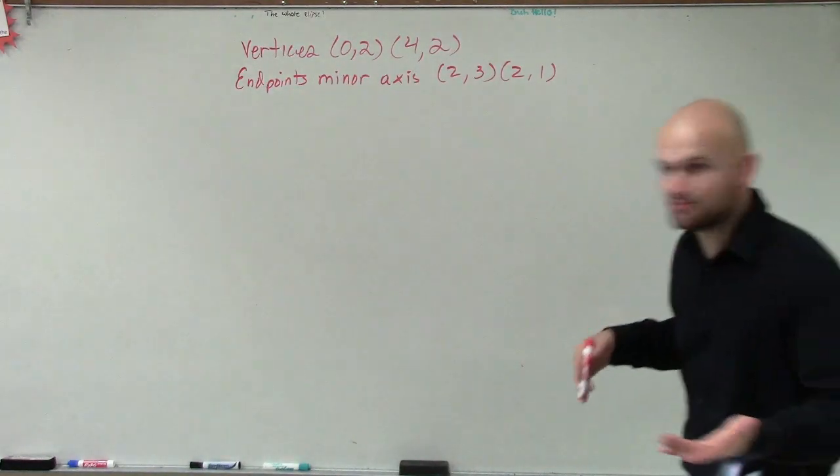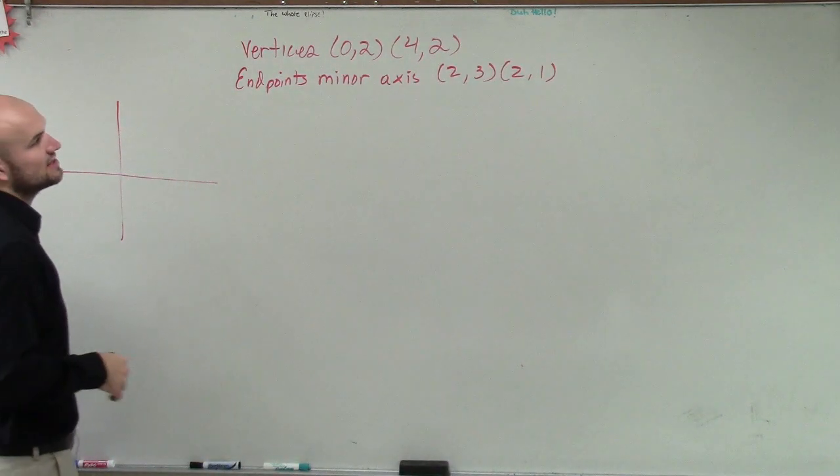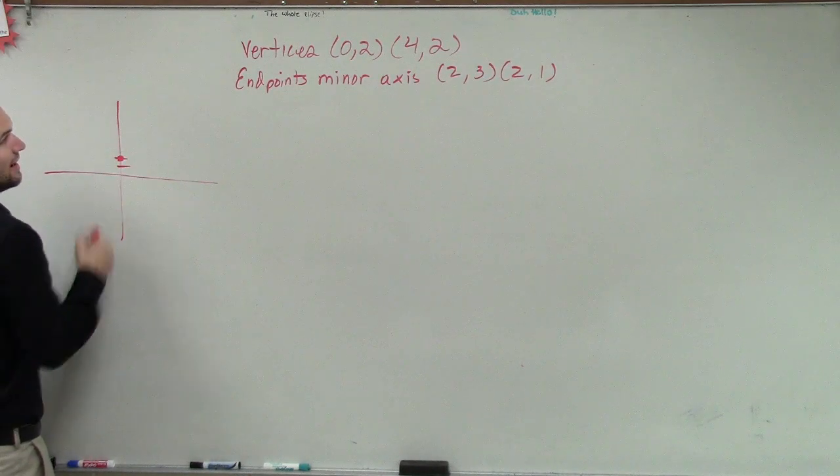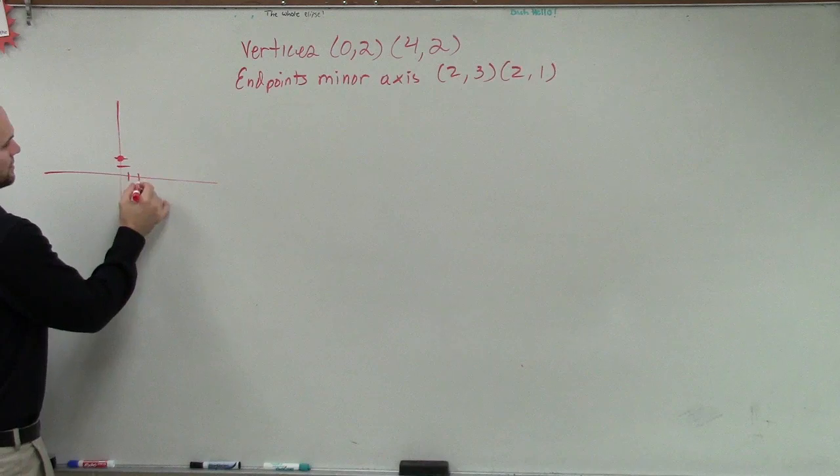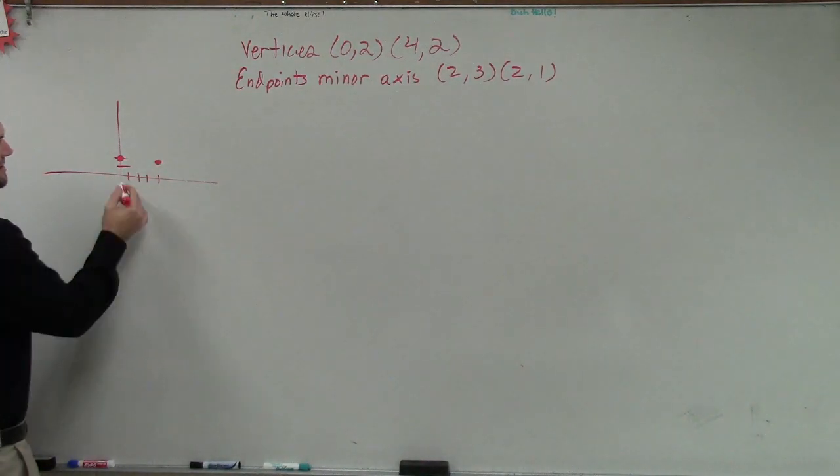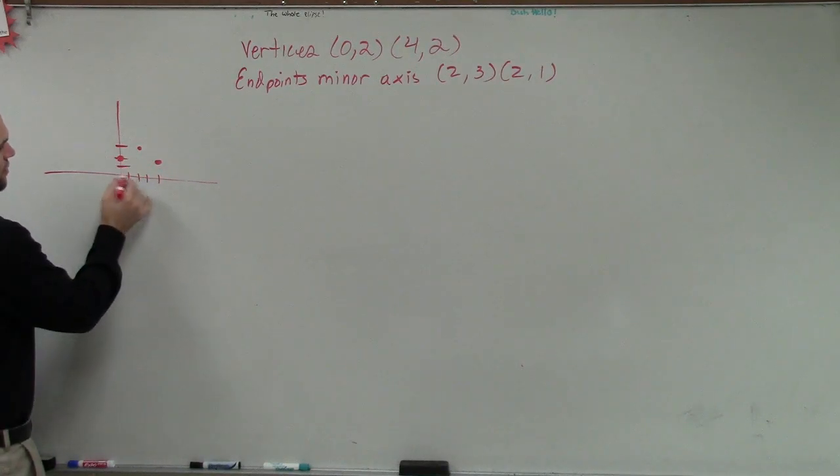So it's just giving us points, right? We need to obviously understand what those points are. Well, let's just go and plot them. So we say vertices are at 0, 2, and at 4, 2. Then we have the endpoints of the minor axis are at 2, 3, and at 2, 1.